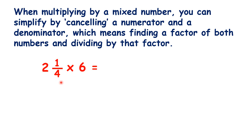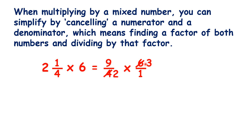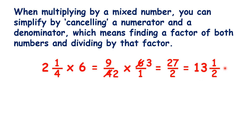As always, when we're multiplying by a mixed number, we change it to an improper fraction, so two and a quarter is the same as nine quarters. We're multiplying by six, which we can write as six over one. But now we get to cross-cancelling. Four and six are both in the two times table, so we can divide them both by two. So we now have nine halves times three over one. Nine times three is twenty-seven, two times one is two. So now we just need to change it back into a mixed number, so we have thirteen and a half.